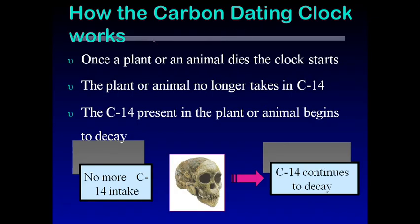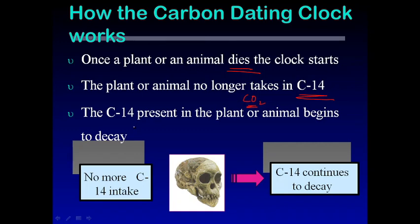The carbon dating clock starts working after a plant or animal dies. After death, the plant or animal is no longer consuming carbon — a dead plant will not do photosynthesis and will not absorb CO2 from the atmosphere, and a dead animal will not eat and will not take up carbon from its surroundings. So whatever carbon was accumulated within the living being up to its death remains inside it, and after death, no more carbon is taken up. Since C-14 is radioactive, it will continue to decay after death.